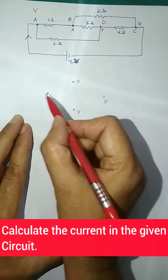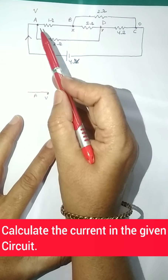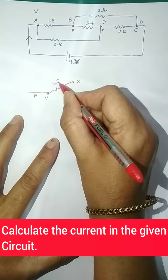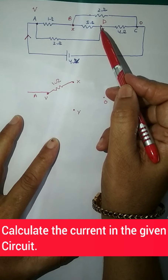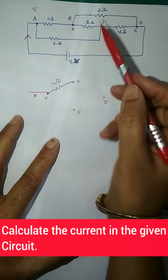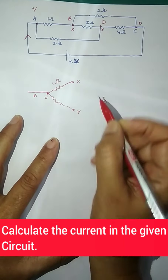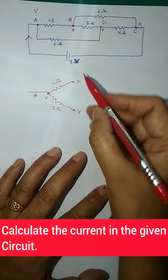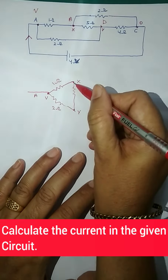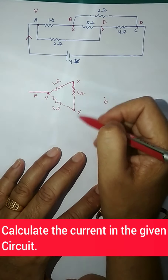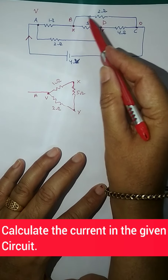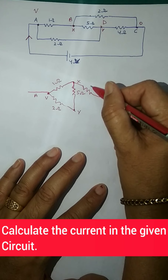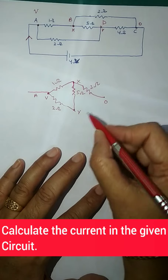At point A, my potential is V. The 1 ohm resistance is connected between V and x. The 2 ohm resistance is connected between V and y. The 5 ohm resistance is connected between x and y. The 2 ohm resistance is connected between x and zero. And the 4 ohm resistance is connected between y and zero.